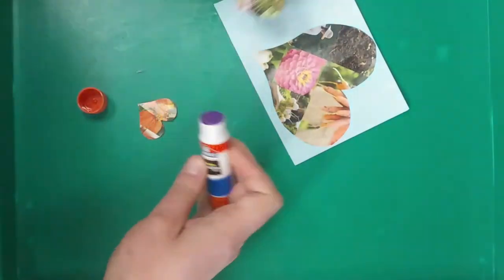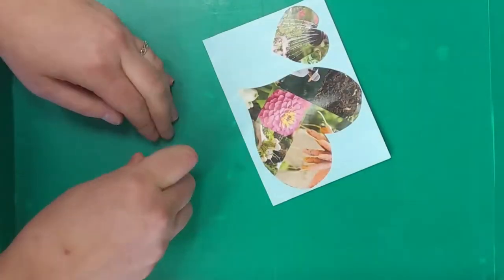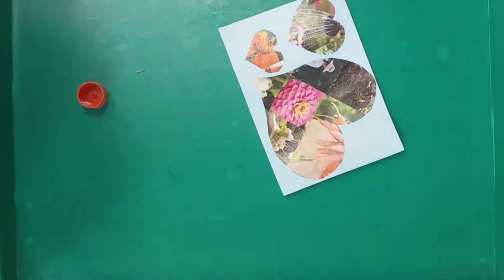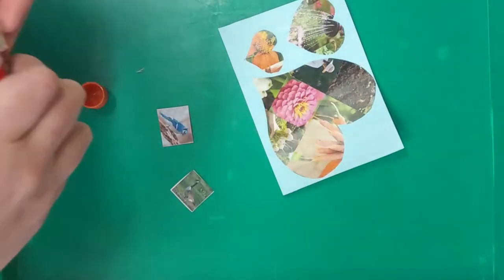Glue any of your cut-out shapes onto your blank card square. There is no wrong way to do this. Even ripping a heart isn't a problem, just glue your shape back together.